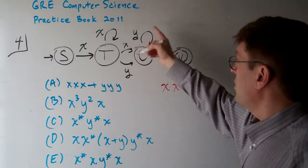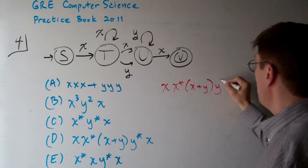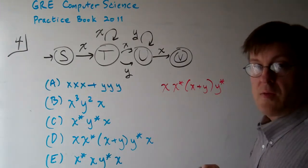Now we're at U. You can also go to Y as many times as you want, including zero times. That's Y star.